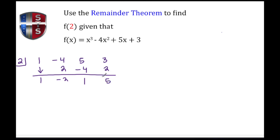And I end up getting 5 as my remainder. Now I want to check this to make sure I get the same answer by doing a simple substitution. So here we're saying f(2), and everywhere I see the x term I'm going to insert a 2.